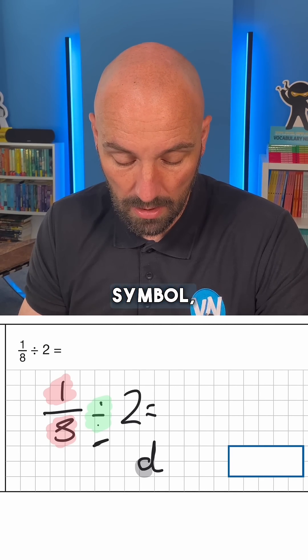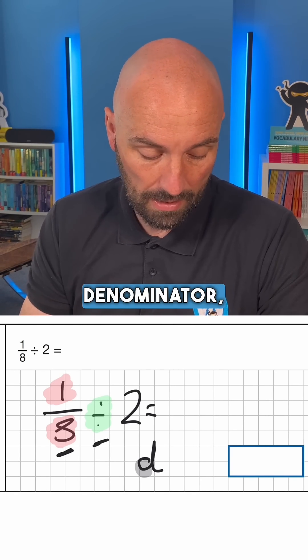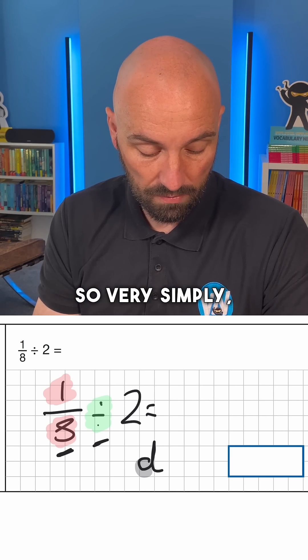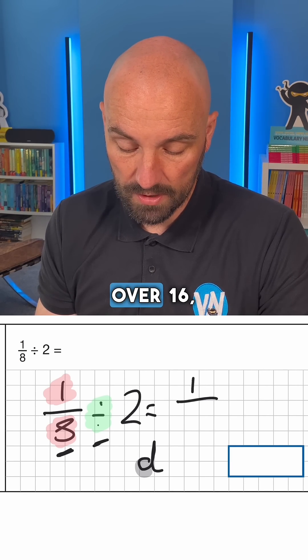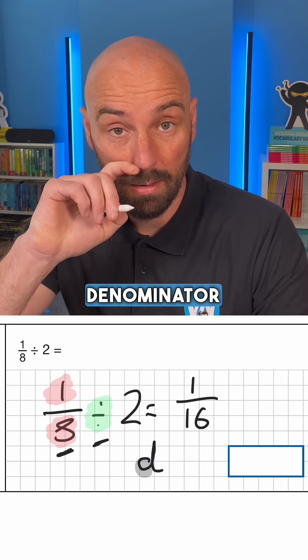So even though we've got a divide symbol, we're going to multiply the denominator by 2. So very simply this is going to become 1 over 16 because we've multiplied the denominator by 2.